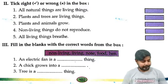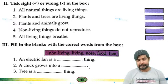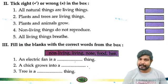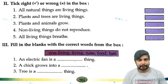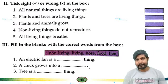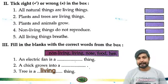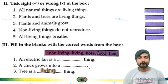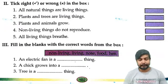Number 3: A tree is a dash thing. The answer is living — a tree is a living thing. Kyun? Kyunki uske andar jaan hai.